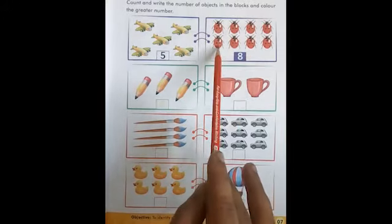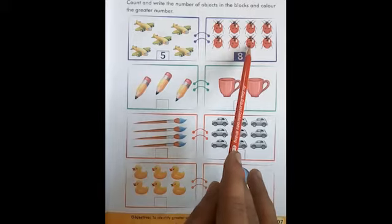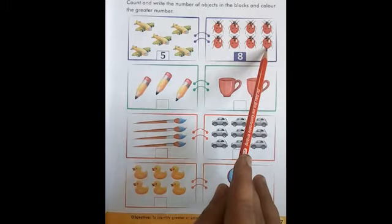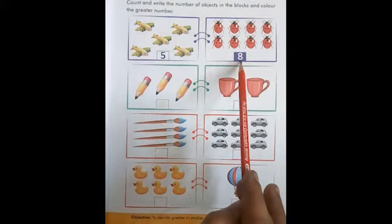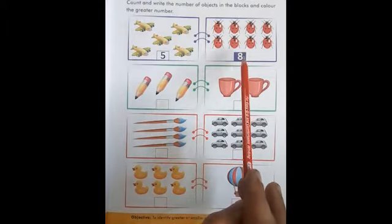...four, five, six, seven, eight. Five is a smaller number and eight is a greater number. Color the greater number.